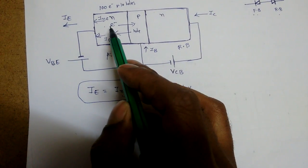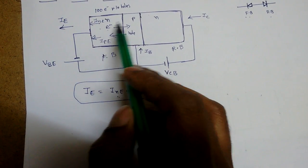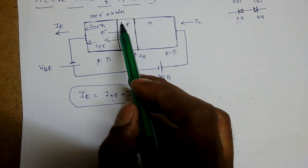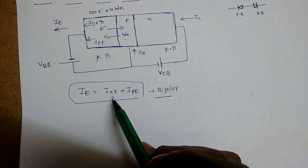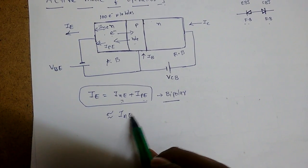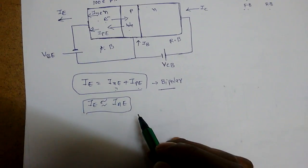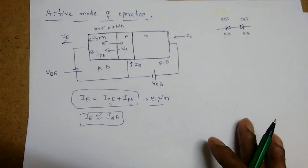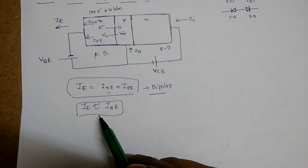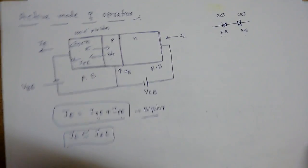The number of electrons diffusing from emitter to base is much higher — say 100 electrons — compared to only about 10 holes moving the other way. So the electron component dominates, and for analysis purposes we approximately say the total emitter current is due to electrons only, though actually it is due to both polarities.